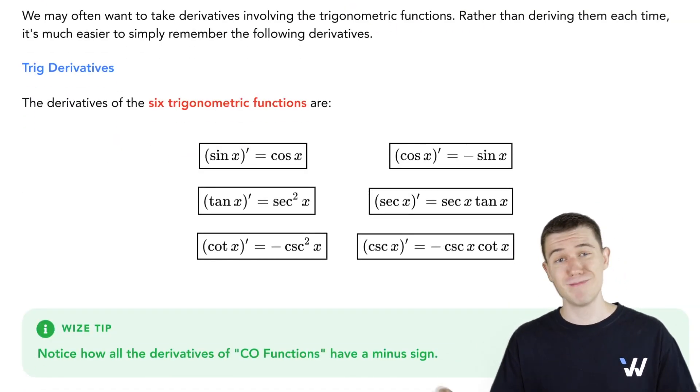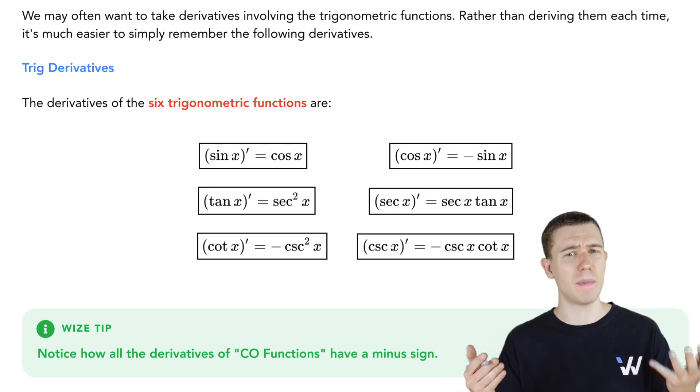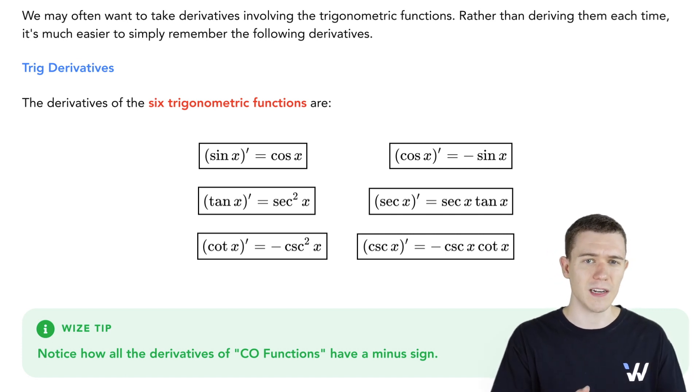The derivative of sine x is cosine x. Hey, that's nice. The derivative of cosine x is minus sine x. So they kind of pair up together. The derivative of sine is cosine. The derivative of cosine is negative sine.